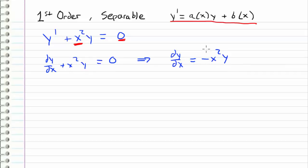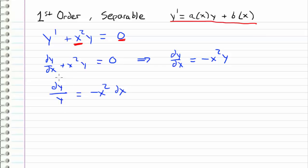Now I'm going to do a little bit of movement here. I can rewrite this equation as dy over y is equal to negative x squared dx. So you can see how we have the dy's with the y's and the x's with the dx.